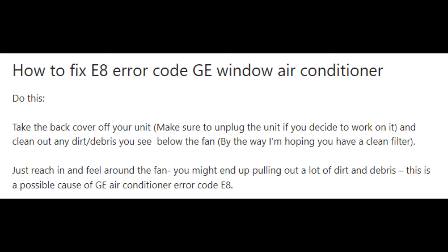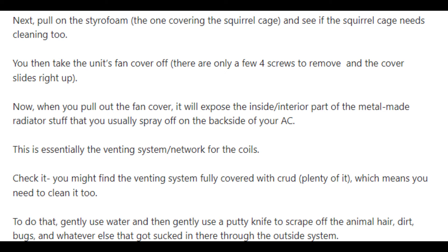Make sure the venting system supporting your window GE air conditioner has been cleaned properly. You may need to take off the back cover and clean debris below the fan and around the fan, making sure the squirrel cage is also cleaned. Once you have cleaned the area thoroughly and ensured that the vents are now breathing freely, error code E8 should go away. You don't have to be a technician to do this — it's something you can do very quickly.